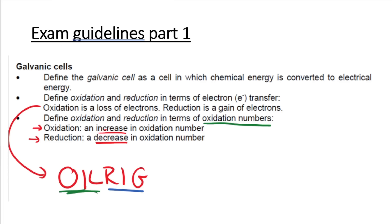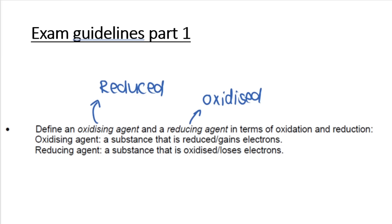It's very important to consult your exam guidelines and study your definitions. OIL RIG: oxidation is loss of electrons, reduction is gain. You also need to be able to define oxidation and reduction in terms of oxidation numbers — oxidation is an increase in oxidation numbers, and reduction is a decrease in oxidation numbers. You also need to be able to define oxidizing agents and reducing agents.